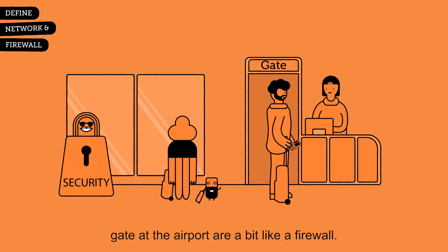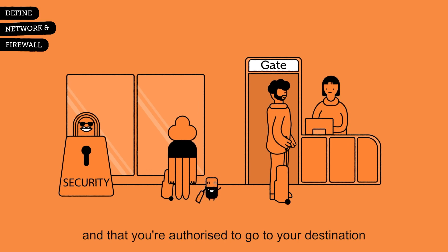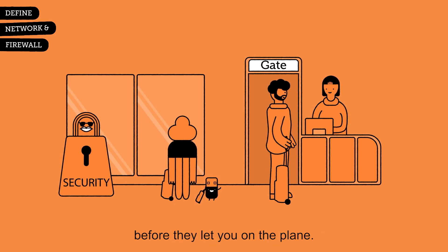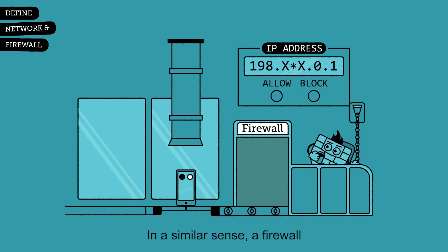Checks at the boarding gate at the airport are a bit like a firewall. Before you're allowed on the plane, someone checks who you are, where you're from, and that you're authorized to go to your destination before they let you on the plane. In a similar sense,